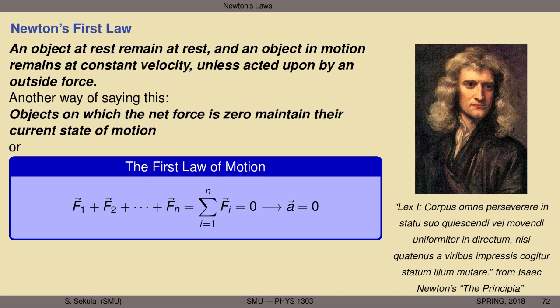An object at rest remains at rest, and an object in motion remains at constant velocity, unless acted upon by an outside force. Another way of saying this: objects on which the net force is zero maintain their current state of motion. If they're at rest, no net force, they stay at rest. If they're in motion, they will be in motion at constant velocity with no acceleration — unless the net force is not zero, in which case their state of motion can be changed.